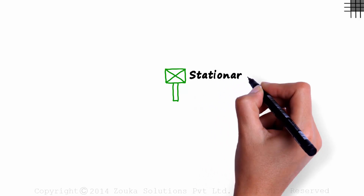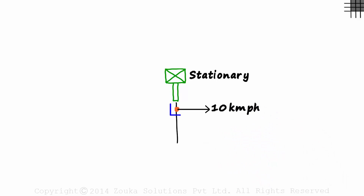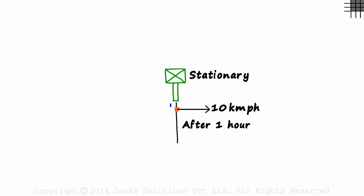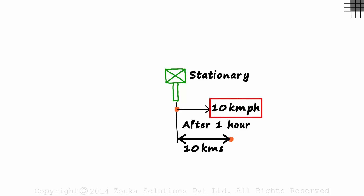Think of this green thing as a stationary point. From this point, say you are running towards the right at the speed of 10 km per hour. This point is stationary and you are running towards the right. How far from this point will you be after one hour? You will be somewhere here, 10 km away from the starting point. We relate our position to a stationary point. Every hour, we keep moving 10 km further away, and that's why we say the speed is 10 km per hour relative to this stationary object.